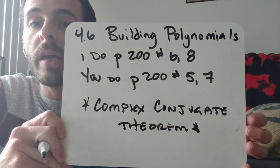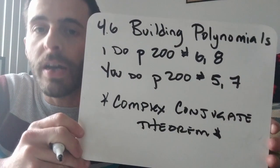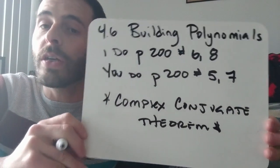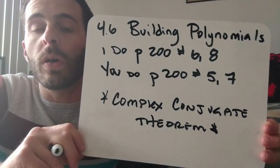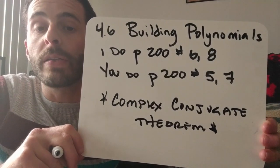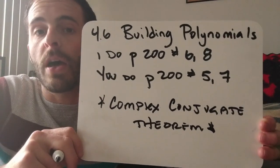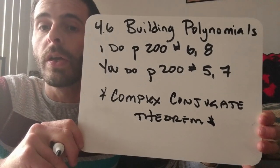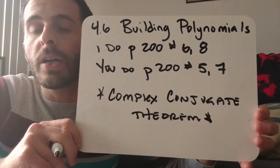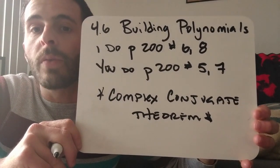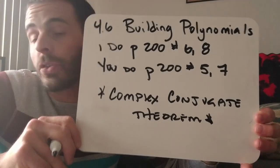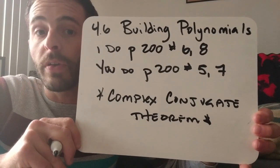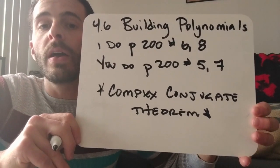First, take a look at the complex conjugate theorem. Just like in 4-5, whenever we have a radical as one of our roots, we know that its conjugate — which means just change the sign in front of the radical — is also a root. The complex conjugate theorem states that whenever there's an imaginary number as one of the roots, we know that its conjugate, so just change the sign in front of the i, is going to be a root as well.